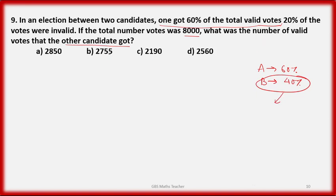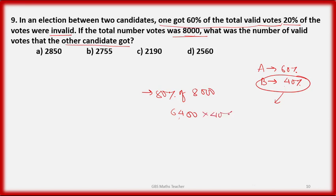Total votes = 8,000. Since 20% were invalid, 80% were valid: 80% of 8,000 = 6,400 valid votes. The other candidate got 40% of valid votes: 6,400 × 40/100 = 2,560. That is the answer.